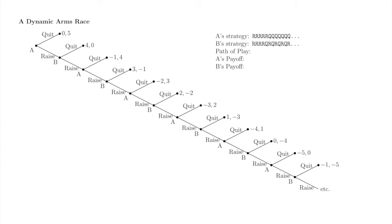Finally, consider the following strategies: A raises at each of A's first five moves and then quits at all subsequent moves. B raises for each of B's first four moves, and then alternates between quit and raise, quitting at B's fifth move. The path of play is that A raises and B raises four times, then A raises, and then B quits. A receives payoff zero — A receives the $5 prize but raised five times, so five minus five is zero. B receives payoff minus four — B raised four times on the path of play, so zero minus four is minus four.